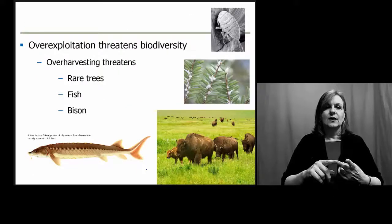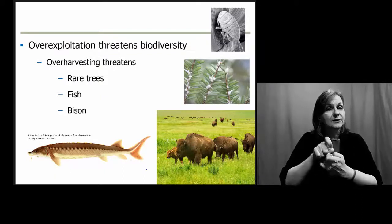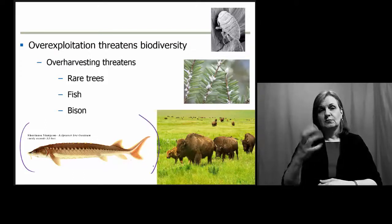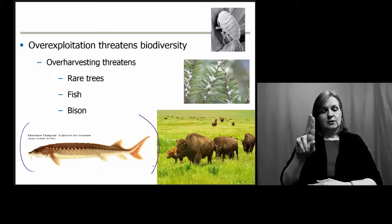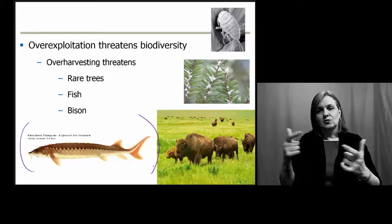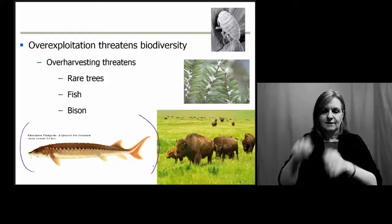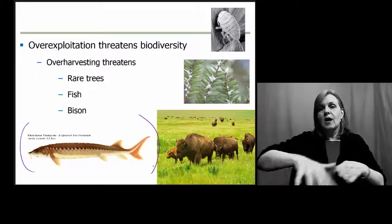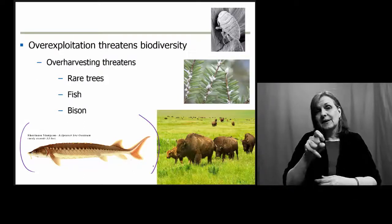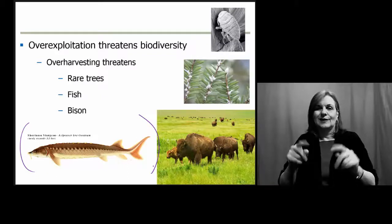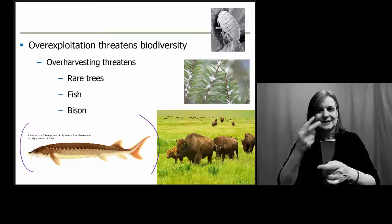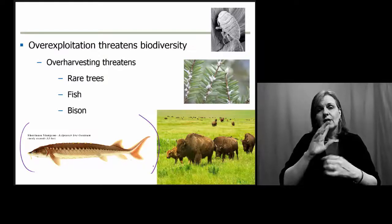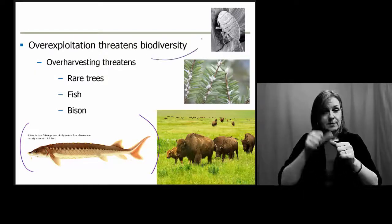We also look at changes in the use of particular species that would threaten biodiversity. When we look at fishing and aquaculture, sturgeon that used to be very prominent in the Great Lakes have become much more rare because of overfishing. We look at the loss of bison in the U.S., which used to roam the plains wildly. Now we see some resurgence with ranching or farming of bison, but we still don't see the natural populations we used to. Rare trees and all kinds of species come into play when we talk about changes in biodiversity.